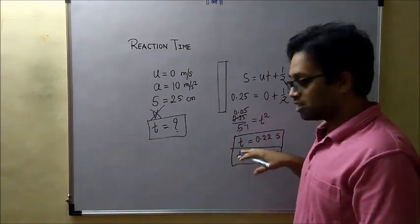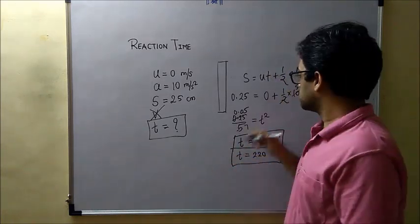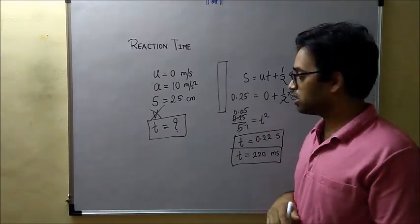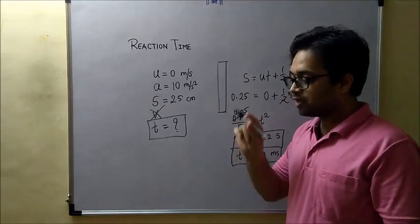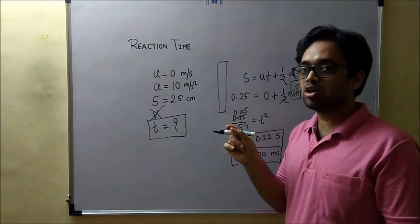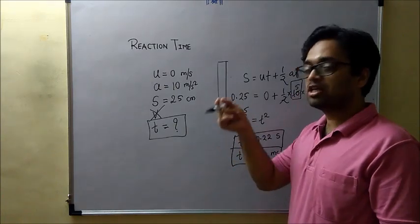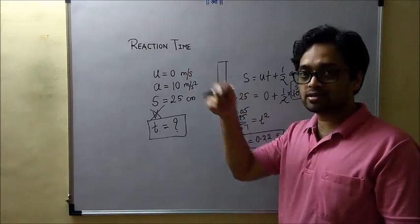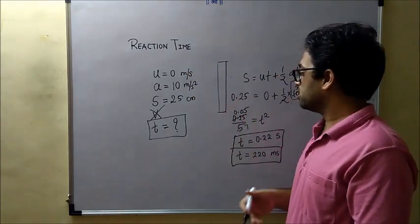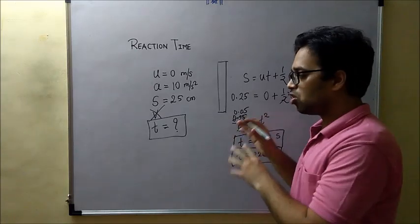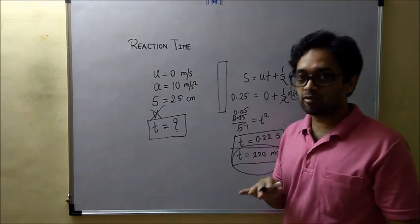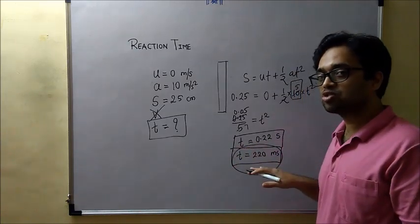Now this is an approximate value of course because I have made so many assumptions. This 10 meters per second squared is an approximate value. Then your fingers are thick. So wherever, on whichever mark you hold those fingers, that is not clear whether it is 25 centimeter or 24 or 26. So that much plus or minus 1 centimeter tolerance is there. So with all those errors involved in the calculation, still this is a good idea about the reaction time of a person. It is in milliseconds. It is 220 milliseconds.